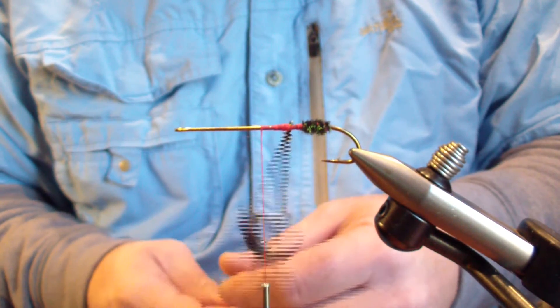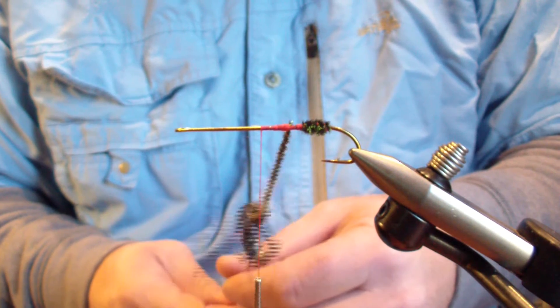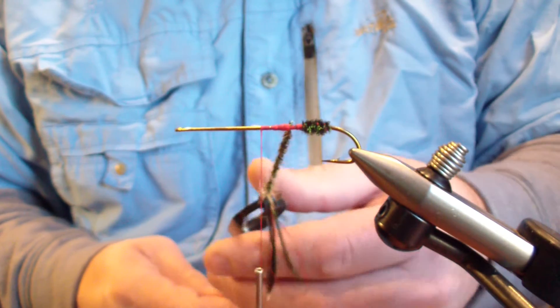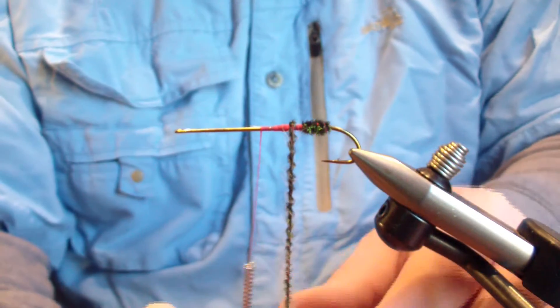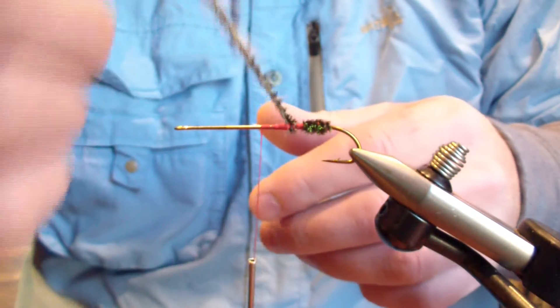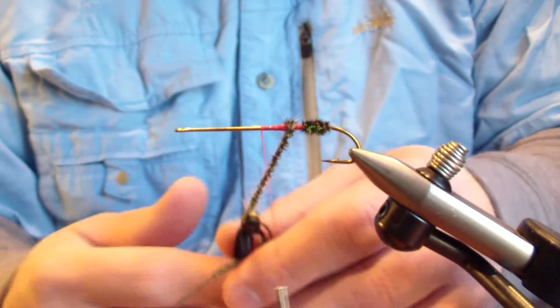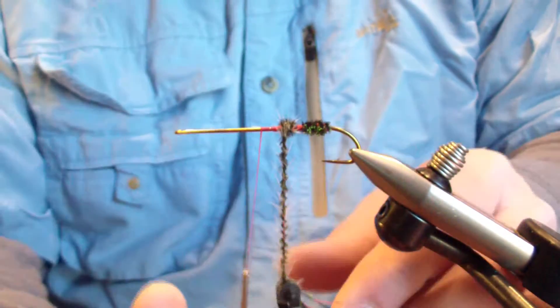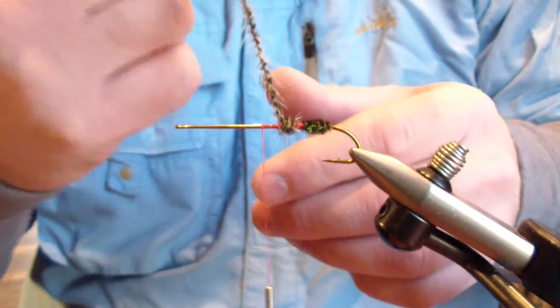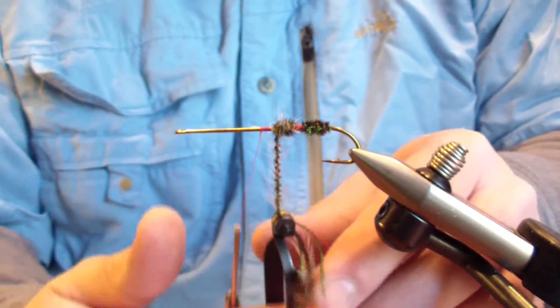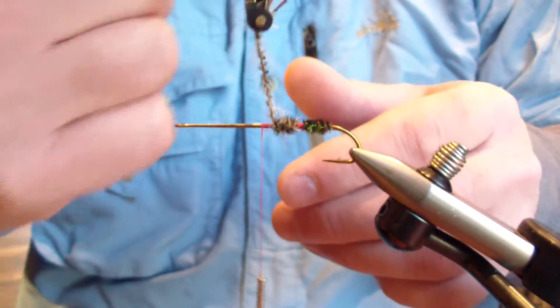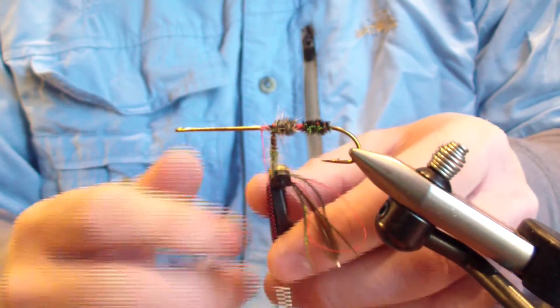And as you twist, you'll see your hackle start to pop. It'll open up a little bit. As soon as you see that open up all the way back to your hook, you're going to start wrapping. You're going to wrap the exact same way as you did for a standard hurl body. And you'll see as you start to wrap, that hackle will stand up in dry fly fashion, even though it's wrapped in a dubbing loop.